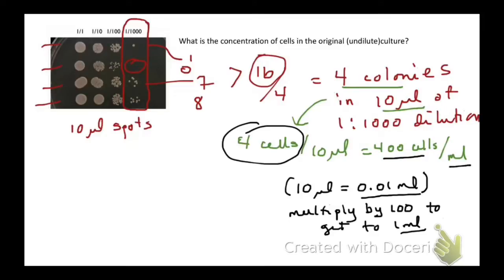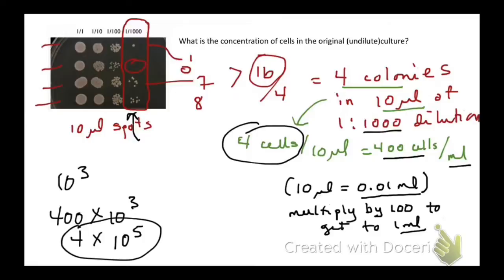Now that we've averaged the cells and accounted for the fact that we only spotted 10 microliters and converted that to mils, we can take into account the dilution factor. The dilution we were using to count colonies is 1000, or 10 to the 3. So our original culture would have contained 400 times 10 to the 3, or 4 times 10 to the 5 if we simplify that, and that would be yeast cells per mil.